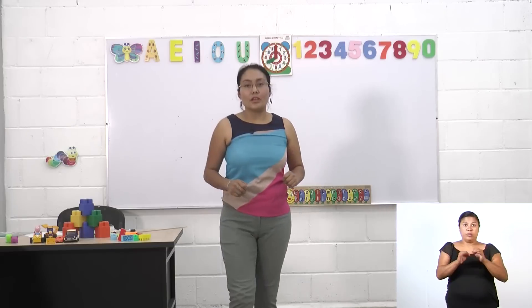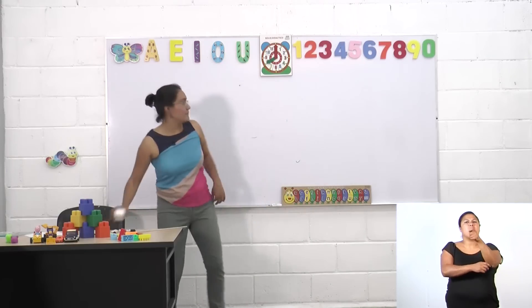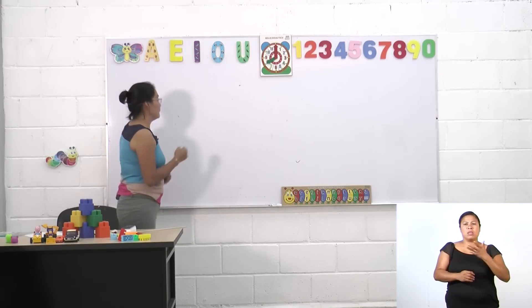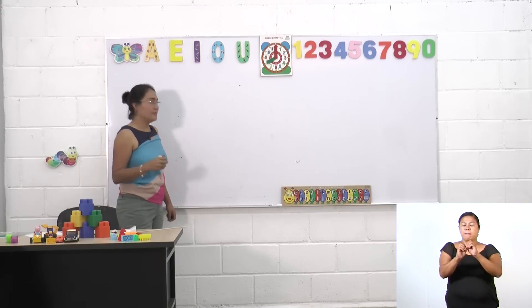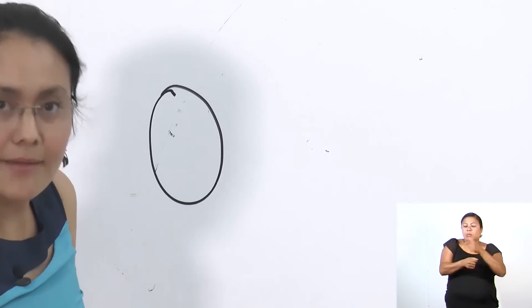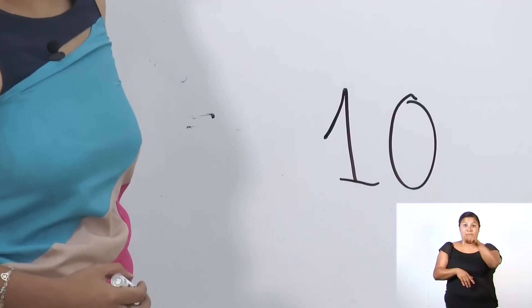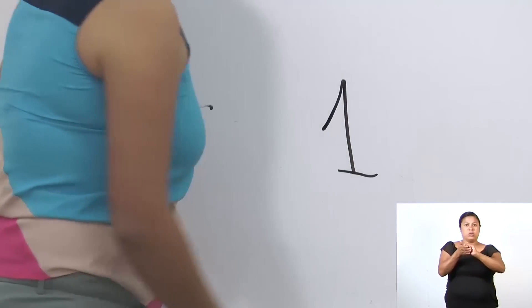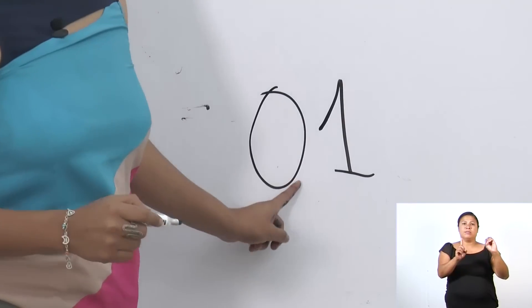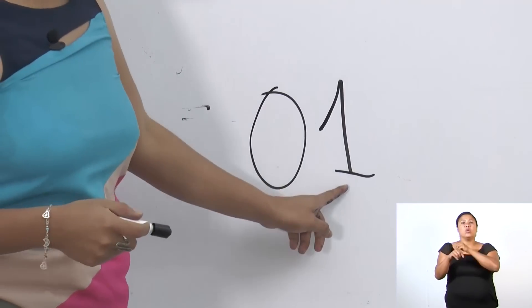Es importante recordarte que los números son un sistema de numeración de diez dígitos. Tenemos a un número mágico: el cero. ¿Y saben por qué es mágico? Porque siempre se esconde tan bien que solo se le encuentra cuando se escribe del lado derecho, es decir, cuando yo escribo el número diez. Ahí nos ayuda a representar una cantidad. Pero si lo escribo del lado izquierdo, es invisible, porque no presenta una cantidad. Solamente se está representando el número uno en una colección.